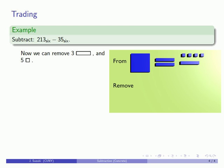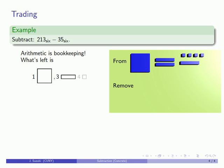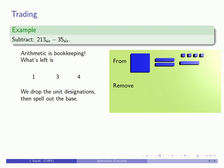And arithmetic is bookkeeping. What I want to do is I want to write down how many of which units. And what I have left I have 1 large, 3 medium, and 4 small. And to get my final answer I'll drop the unit designations. And I'll spell out the base.